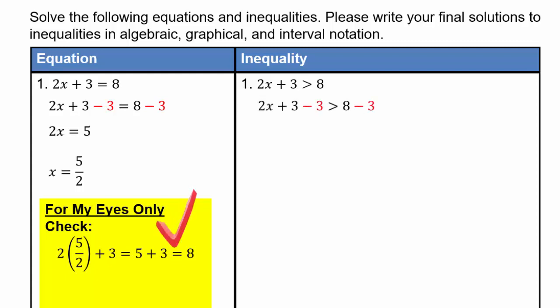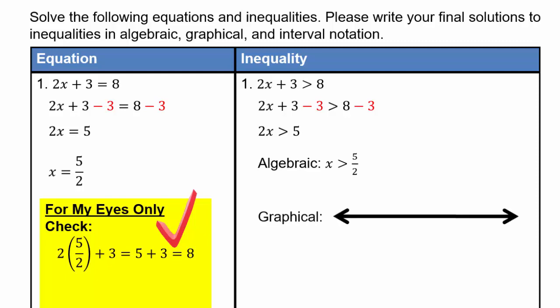Let's do the inequality. Same way — subtract 3 from both sides, divide both sides by 2, and you get the algebraic solution x greater than 5 halves. We preserved the inequality because we were dividing by a positive 2. Graphically, draw a number line, plot 5 halves with an open hole because it's not included, and shade everything above 5 halves. Interval notation: round bracket or parenthesis for 5 halves because it's not included, and infinity is never included — it's a concept, not a number. So the interval represents all real numbers bigger than 5 halves.